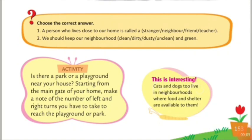Choose the correct answer. A person who lives close to our home is called a stranger, neighbor, friend or teacher? Jo humaare ghar ke paas rehta hai, usse bolte hai neighbor. Second: we should keep our neighborhood clean, dirty, dusty, unclean, or green? We should keep our neighborhood clean.